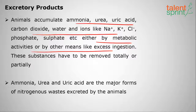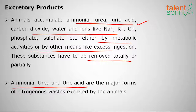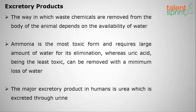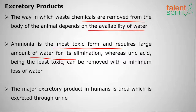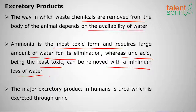The substances to be removed include ammonia, urea, and uric acid — the major forms of nitrogenous waste excreted by animals. The way waste chemicals are removed depends on the availability of water. Ammonia is the most toxic form and requires the largest amount of water for elimination, whereas uric acid, being the least toxic, can be removed with minimum water loss.